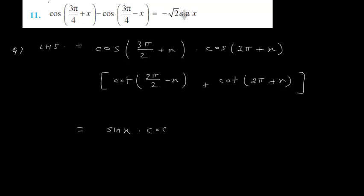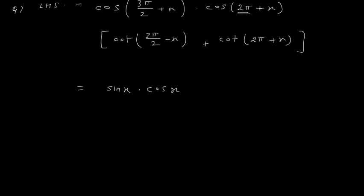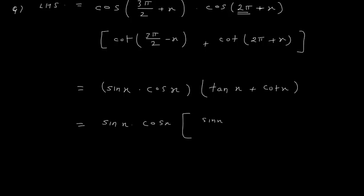Cos(2 pi plus x) is cos x, since 2 pi is a complete circle. Now cot(3 pi by 2 minus x): cot converts to tan, and the sign is positive since it is the third quadrant, giving tan x. Plus cot(2 pi plus x) is cot x. So the expression becomes sin x into cos x into tan x plus cot x.